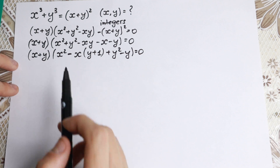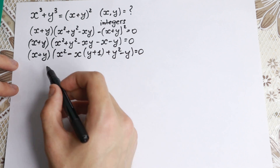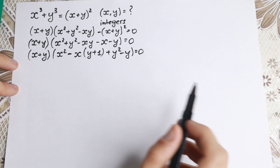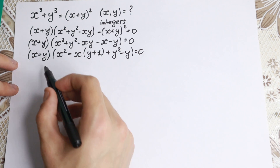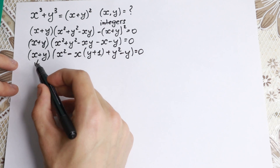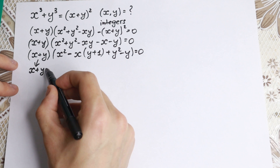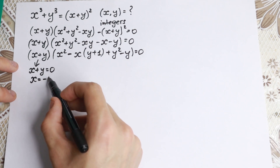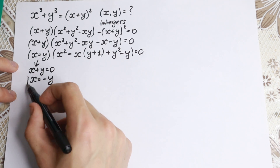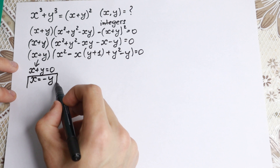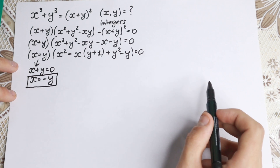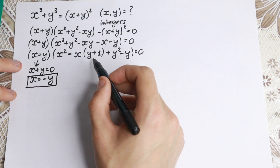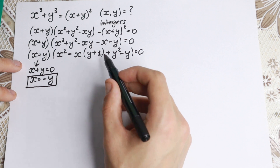We have a product equal to 0. We all know this is a classic math case: product equal to 0, then this element (x+y) equal to 0. From here x equal to minus y. Let's start with it — x equal to minus y. And right here we have this second element equal to 0.